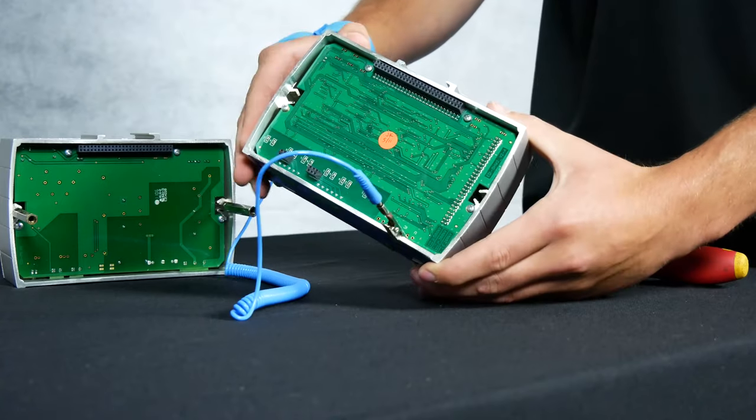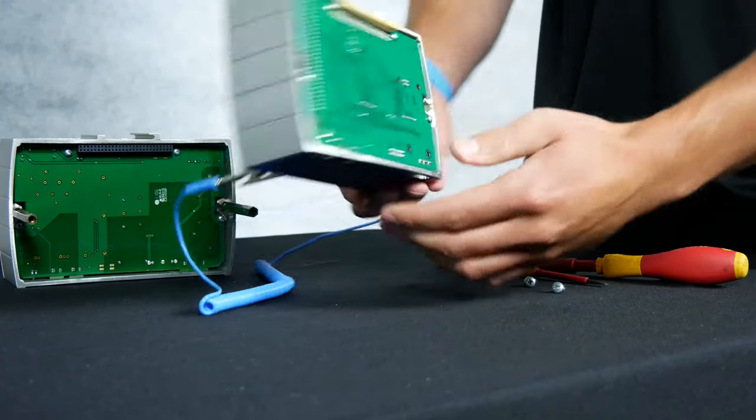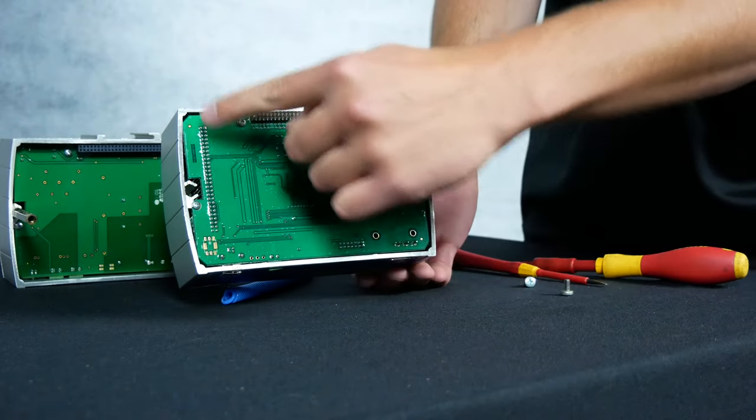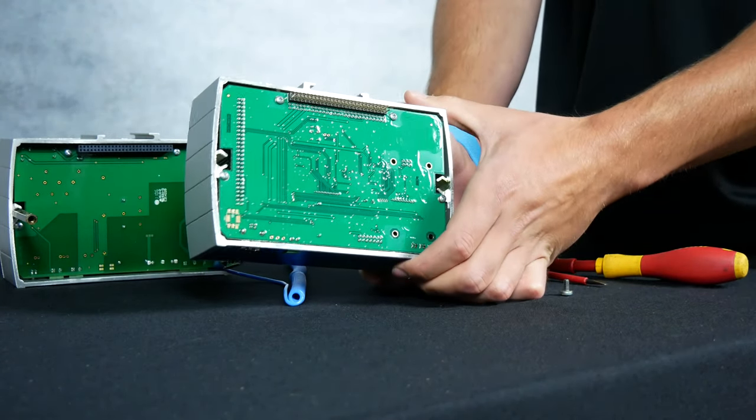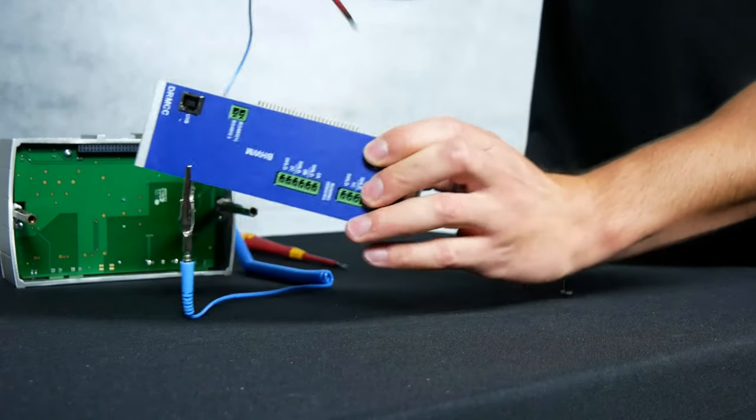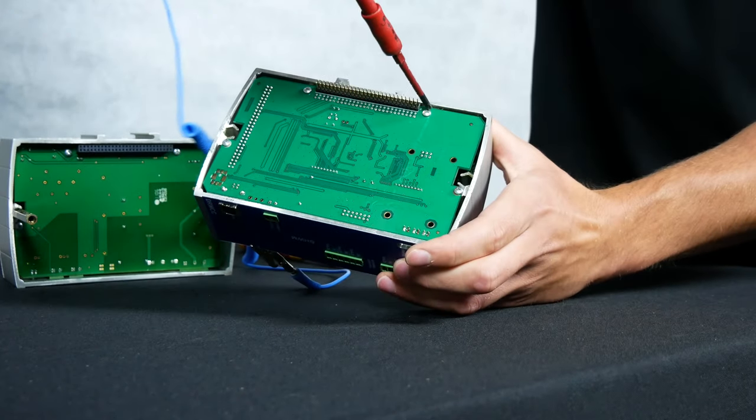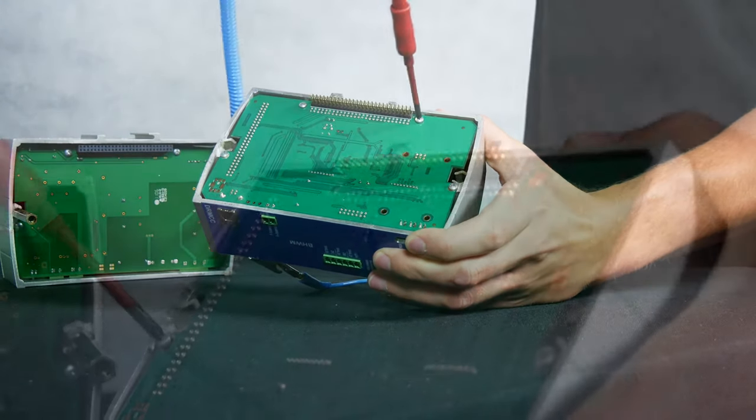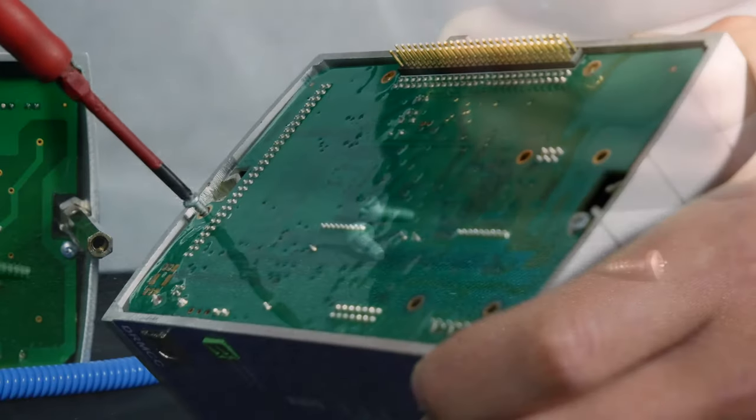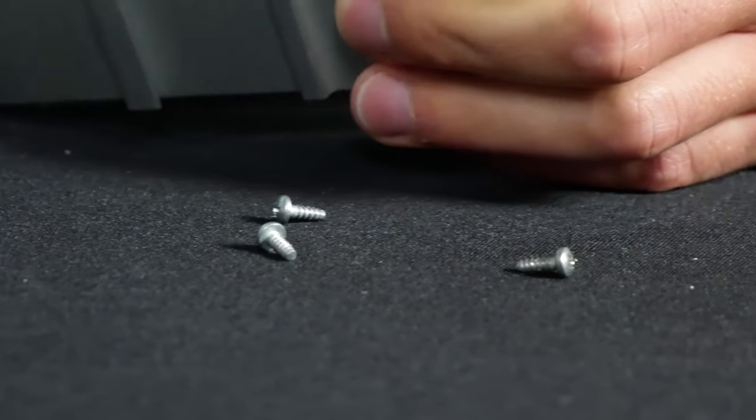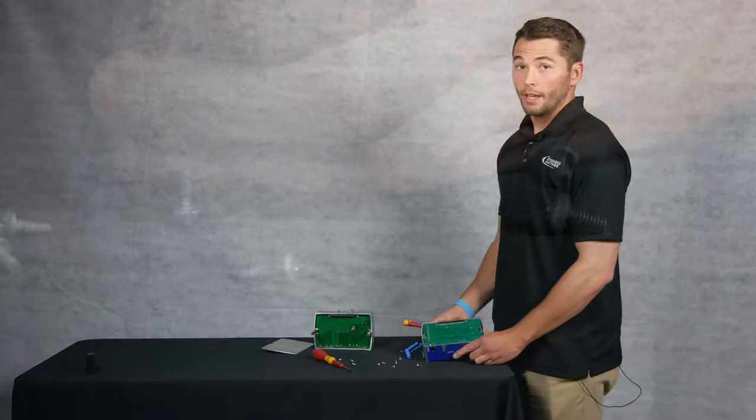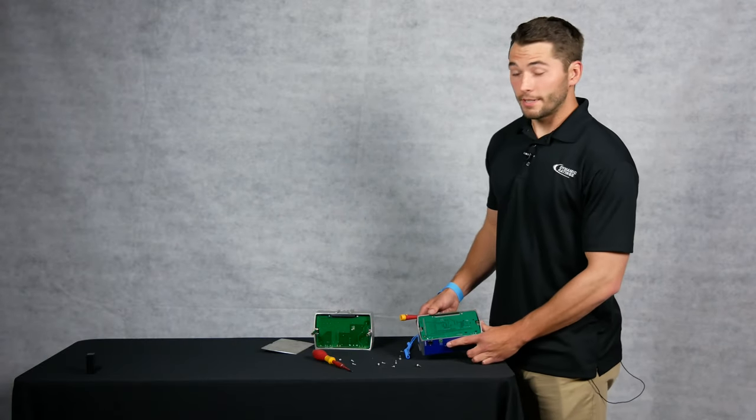Alright now you have these two center boards right here and one right here and they are connected with a series of screws and pins here and here. So we will then start removing each of these screws. Now once you've removed all the screws...